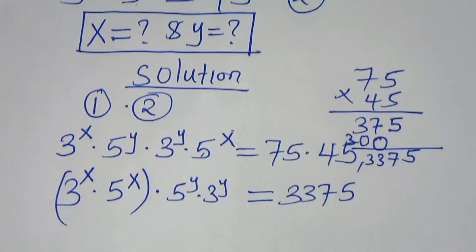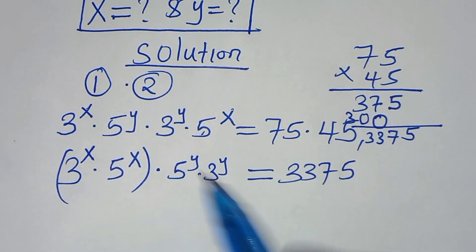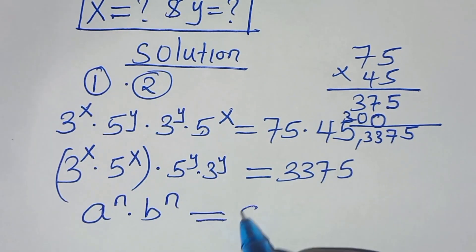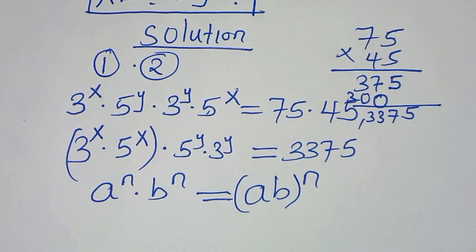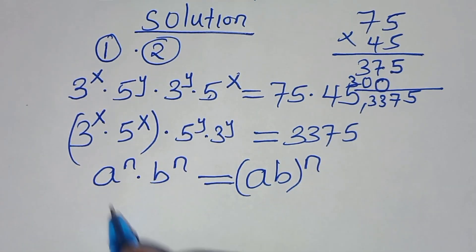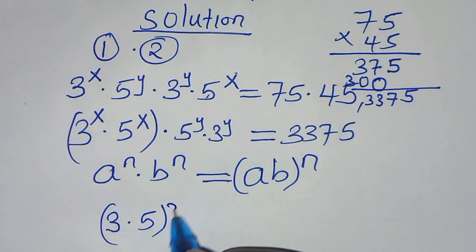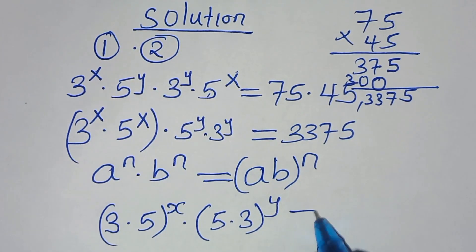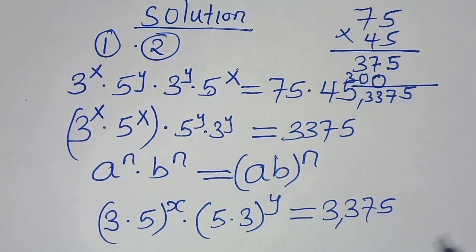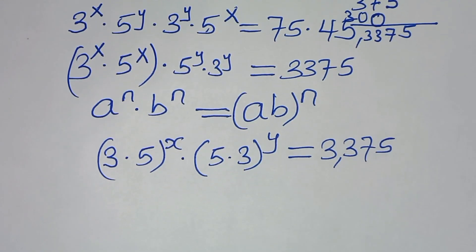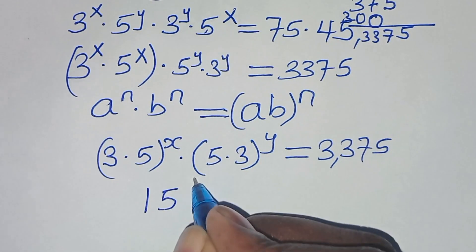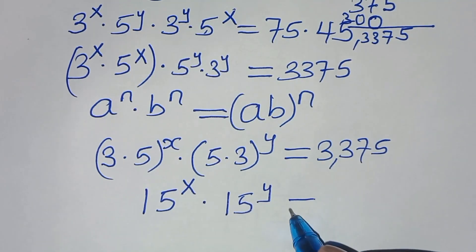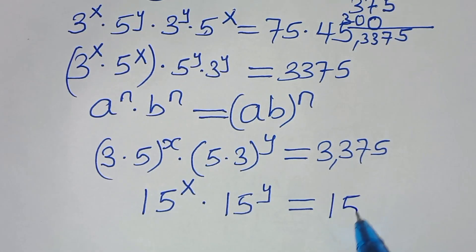Now, 3 to the power of x times 5 to the power of x is in the form of a to the power of n times b to the power of n, which we can express as (a·b) raised to the power of n. Applying this exponent property, we have 3 times 5 raised to the power x, then times 5 times 3 raised to the power y, this is equal to 3375. So this implies that 15 raised to the power of x times 15 raised to the power of y equals 3375, which is 15 to the power of 3.